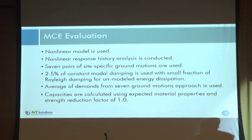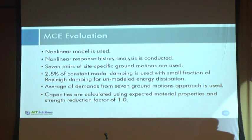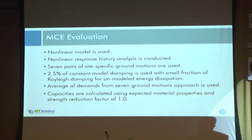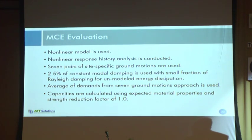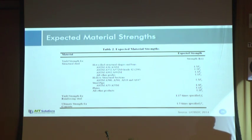In the nonlinear model, we consider 2.5% constant modal damping for all modes for energy dissipation, with a small fraction of Rayleigh damping. The damping will be increased during the analysis when members yield, since we cannot model everything in detail. We use the average demand from seven ground motions, and capacities of structural members are calculated using expected strength properties and a strength reduction factor of 1.0. For expected material properties, for concrete we use 1.3 times the nominal concrete compressive strength f'c, and for reinforcing steel we use 1.17 times the nominal yield strength.